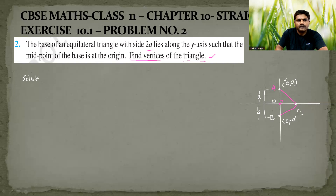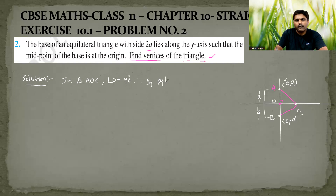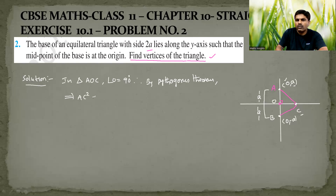So writing the solution: In triangle AOC, angle O equals 90 degrees, therefore it is a right-angle triangle. By the Pythagorean theorem, I will find the length OC. The square of the hypotenuse AC equals the sum of the squares of the remaining two sides AO and OC. So AC² = AO² + OC². We don't know AC — that's why we are finding that value.